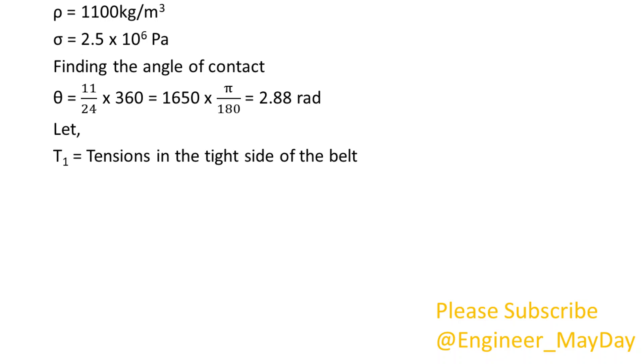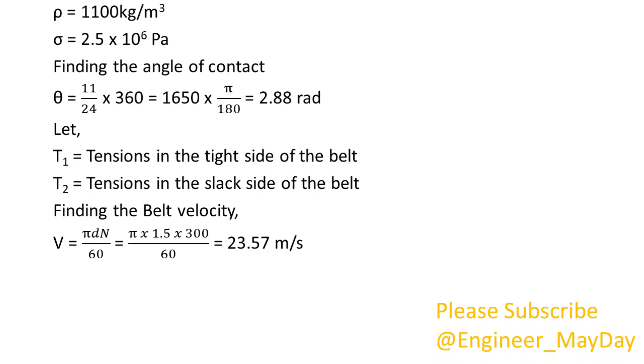Let T1 equals tensions in the tight side of the belt, T2 equals tensions in the slack side of the belt. Finding the belt velocity, V equals 23.57 meters per second.